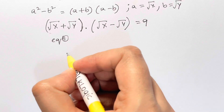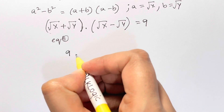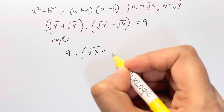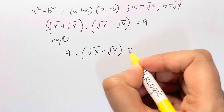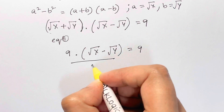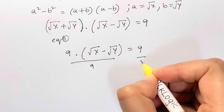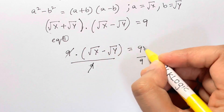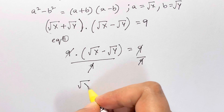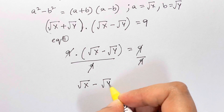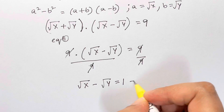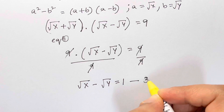So square root of x plus square root of y is 9, times square root of x minus square root of y, equals 9. Dividing both sides by 9, we get square root of x minus square root of y equals 1. Let this be equation 3.